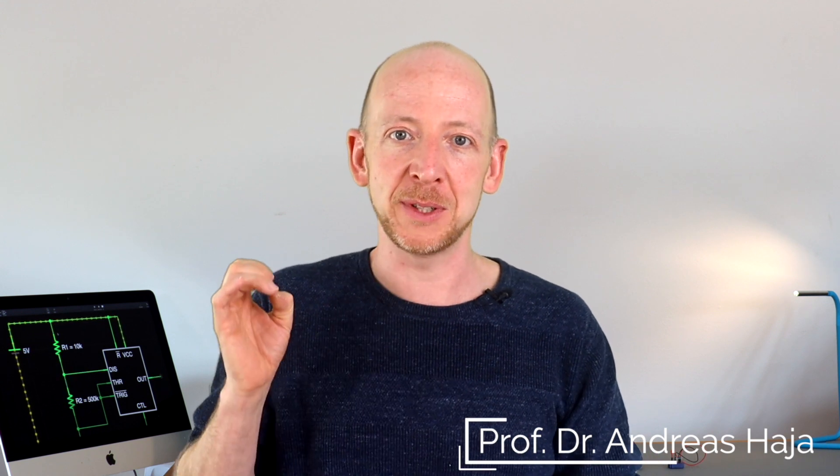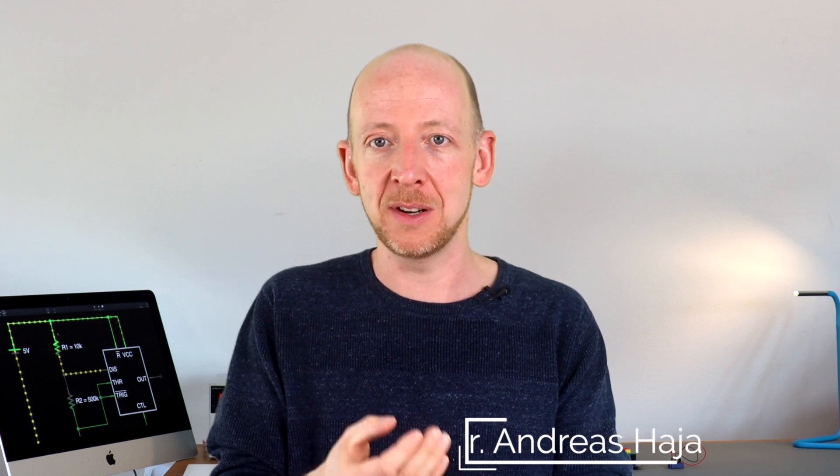In this tutorial we have computed how many free charge carriers there are in one piece of copper wire. And to do this we have first looked at the charge carrier density using the density and atomic weight of copper and then multiplied it by the wire volume. And also we have started to think about moving charges and thus about a time component and an electric field which causes the movement. And exactly these two aspects will lead us to a very simple definition of both current and voltage which we will take a look at in the next video.